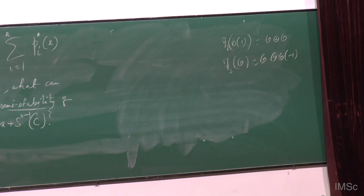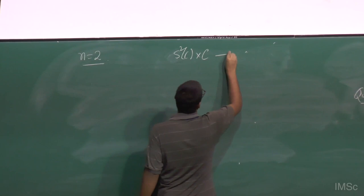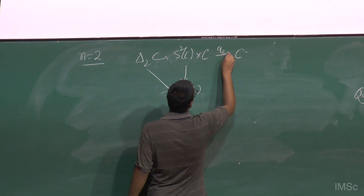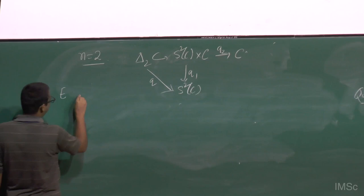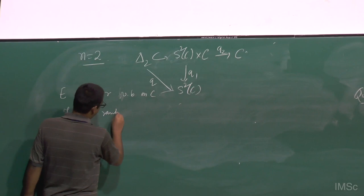In this talk, we mainly focus on the case N = 2. We have S^2(C) × C with Δ_2, maps Q_1 and Q_2. E is a rank R vector bundle on C, and F_2(E) is a rank 2R vector bundle on S^2(C).